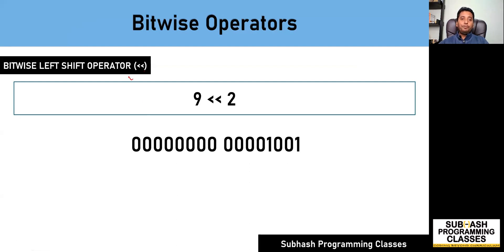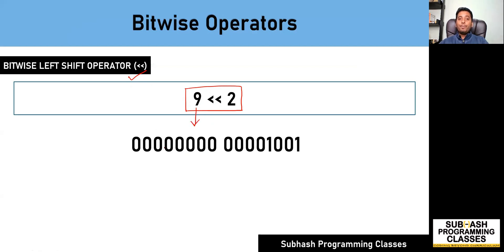Let's start with the bitwise left shift operator. We have an expression which says 9 left shift of 2. This expression says that I will have to shift the bits of this number towards the left two times. As I told you earlier, whenever you're making use of a bitwise operator on a number, you will have to first represent that number in binary form. So I have represented 9 in its 16-bit binary format: 0000000000001001. So this is 9 in binary form. Let's start applying the left shift operator.